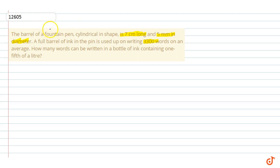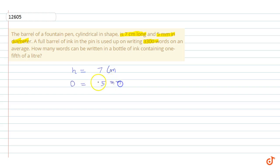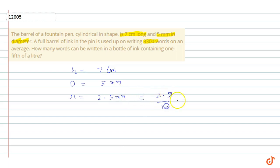We have a barrel of a fountain pen in cylindrical shape. It is given that it is 7 cm long, so height of the barrel is 7 cm. The diameter is 5 mm, so radius is 2.5 mm. We know that 1 cm is equal to 10 mm, so 1 mm is equal to 1/10 cm. Therefore, the radius is 2.5/10 cm, which equals 1/4 or 0.25 cm.